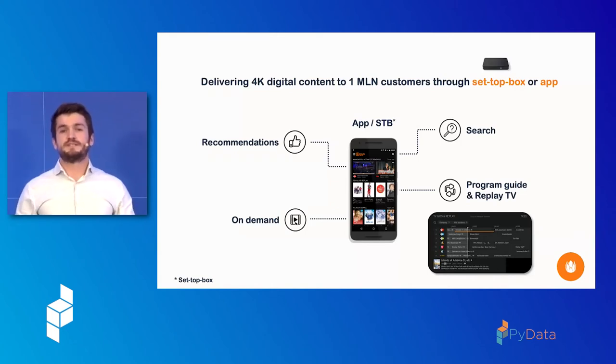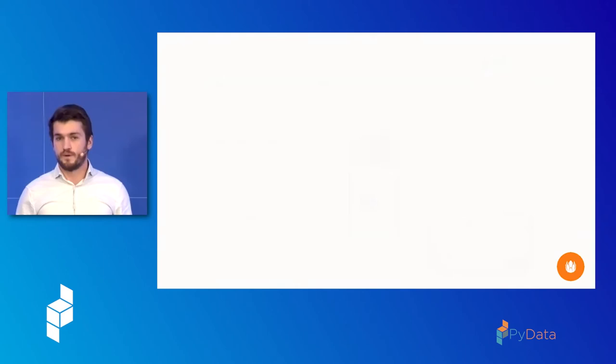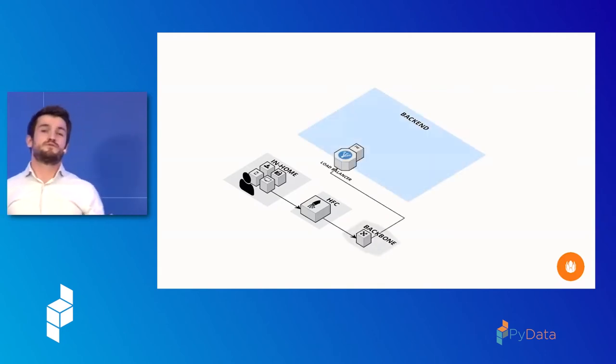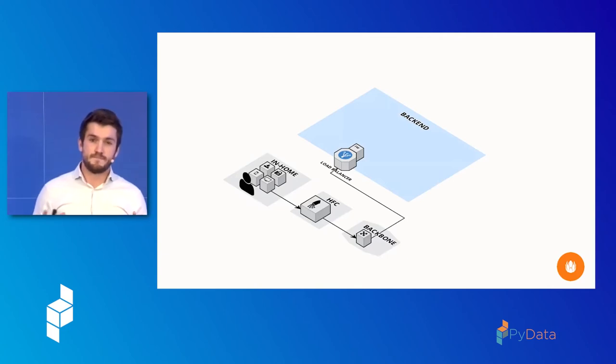So, this is the happy flow. But what if something goes wrong? And where could it go wrong? So, in order to explain how that could happen, let me take you through how content actually goes from one location where it's stored into your device or into your set-top box. So, it starts in the home where you have all these devices. And what you do when you turn on your TV is you send a request to a back-end to get all the information that's displayed on the screen. So first, it goes to the hybrid fiber coax network. That's all the cables in the ground that form a very complex network all the way back to the cable provider. It goes through a backbone and then through a load balancer into what we call the back-end.